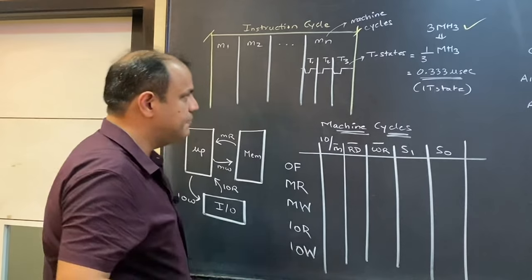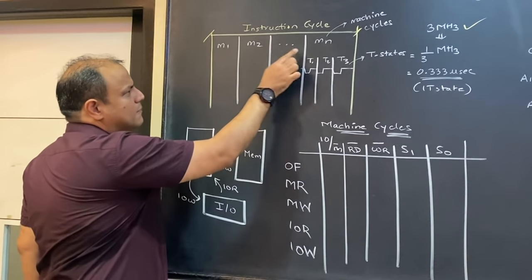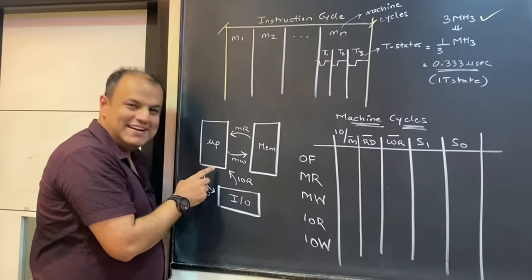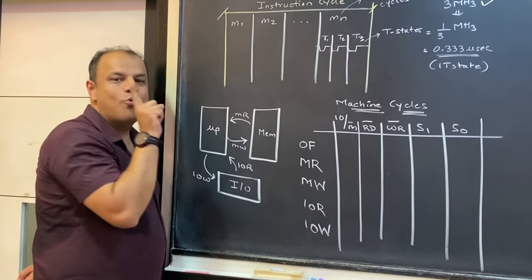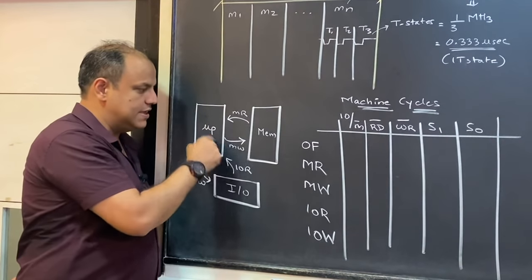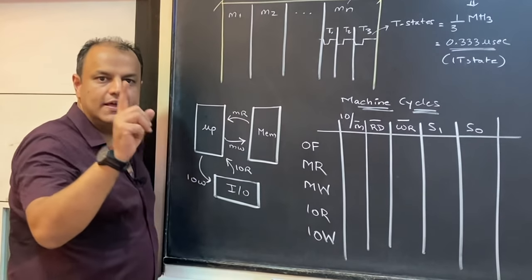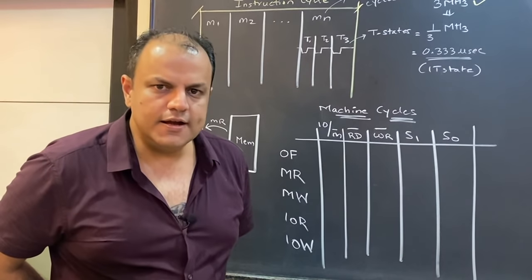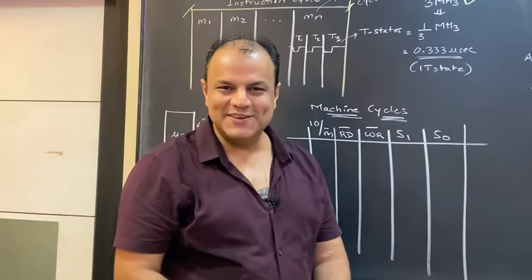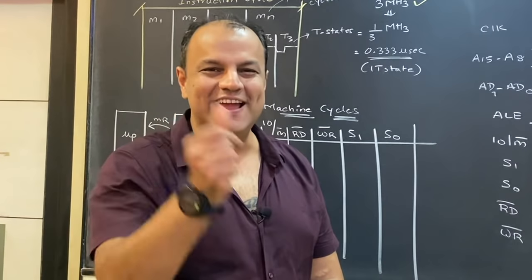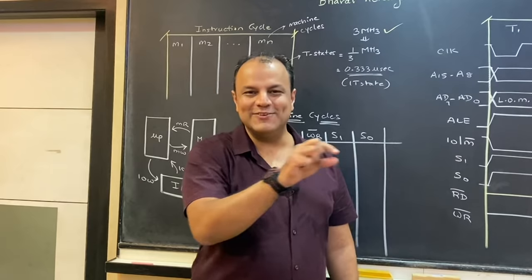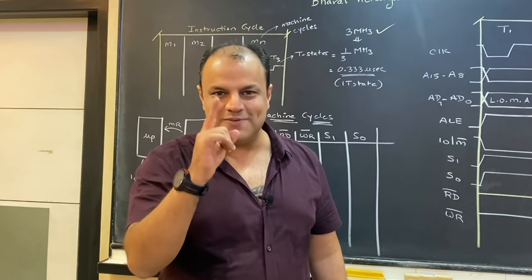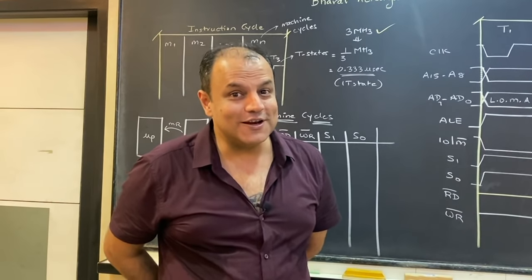Instruction cycle में होते हैं machine cycles, machine cycle में होते हैं T states। Instruction cycle का पूरा process है fetch, decode, execute। उसको अलग-अलग machine cycles लगते हैं — machine cycles होते हैं: memory read, memory write, I/O read, I/O write। मतलब one data transfer को बोलते हैं one machine cycle। एक machine cycle में one byte data transfer होता है क्योंकि 8085 का data bus 8 bits का है।